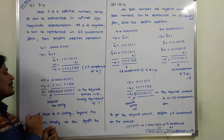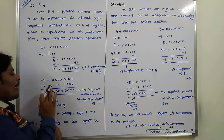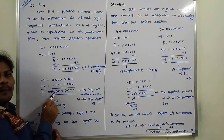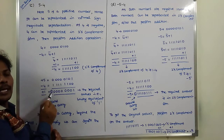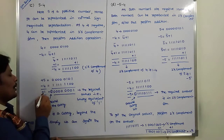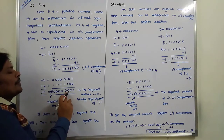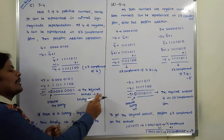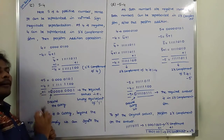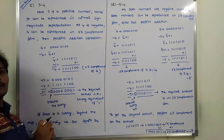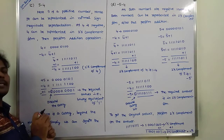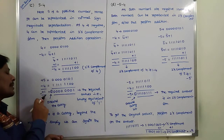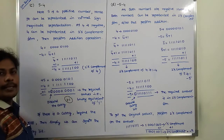So plus 5 minus 4 gives the answer plus 1. After discarding the carry bit, the last bit is the MSB bit. The MSB bit value is 0. If the MSB bit value or sign bit value is 0, it always represents the positive number. The binary form 00000001 is the binary equivalent of decimal 1. So the answer is plus 1.